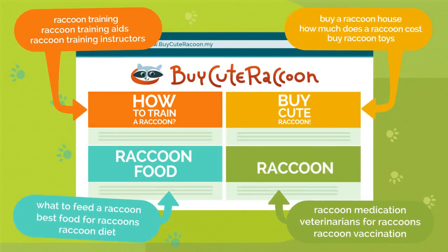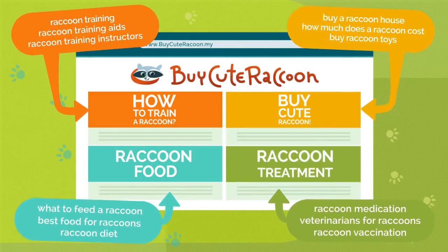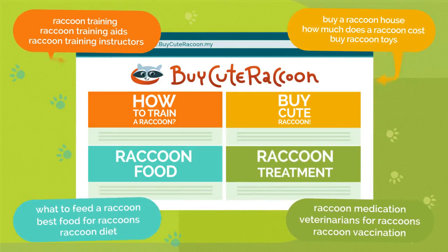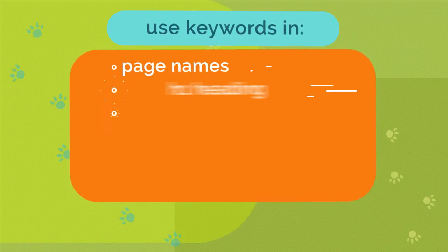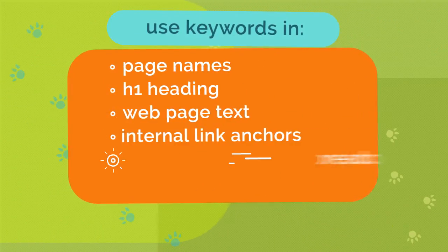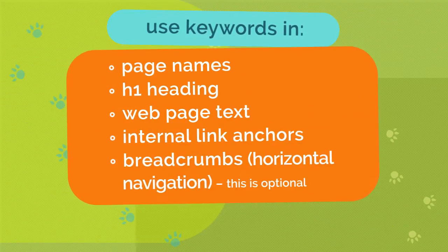That way, you'll create a semantic core you can work with. Now, you just have to optimize the pages of your website for the keywords you've selected.